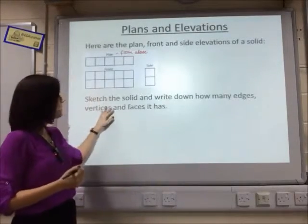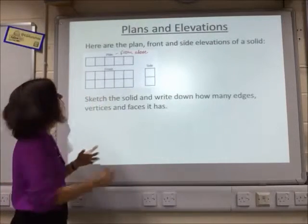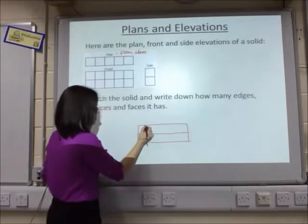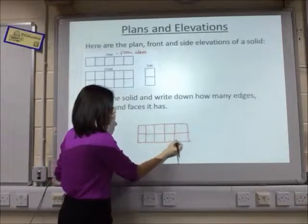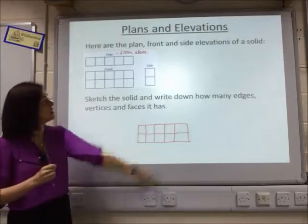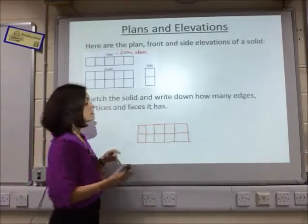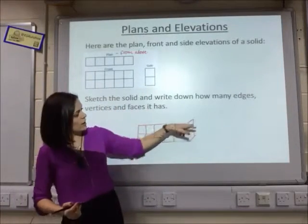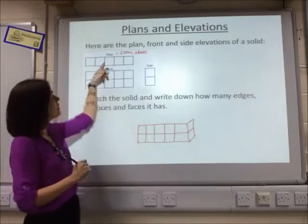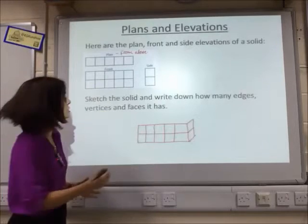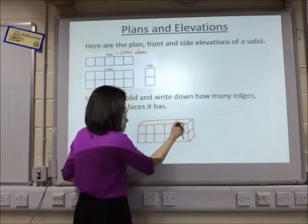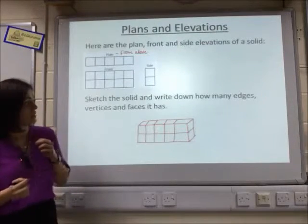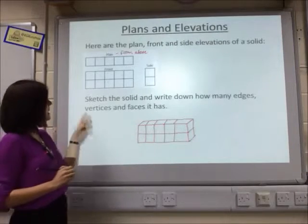If we want to draw a sketch of this solid, the front is just the front — two squares up and one two three four five squares wide. The side view tells me this goes back just one block, so I can draw that on: one square back, two squares tall, just like we can see from the side. The view from above is five squares across and just one square back, finishing it off so we can see one two three four five cubes going across. That's my representation of that solid — it's a cuboid.